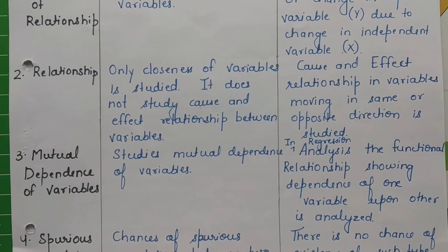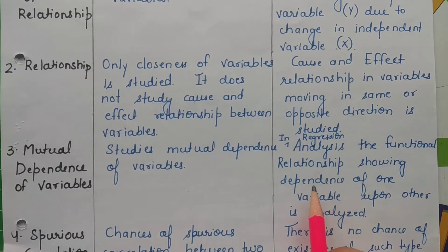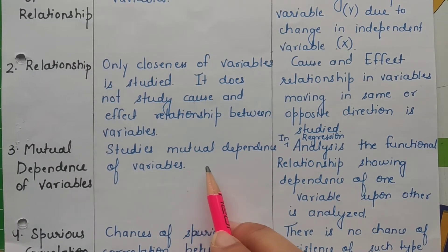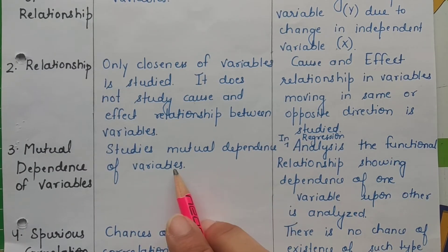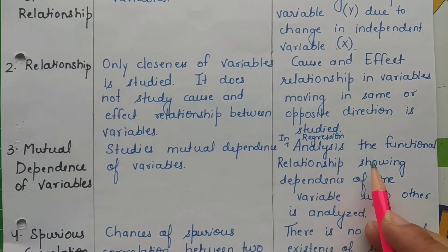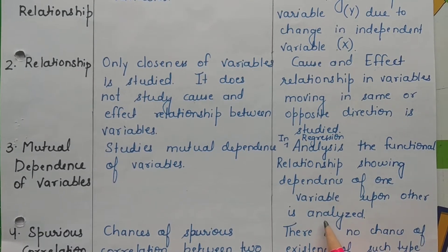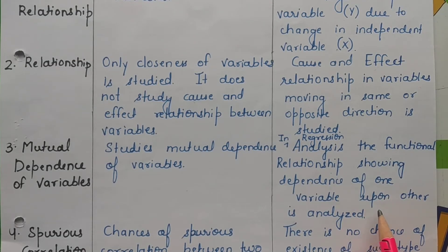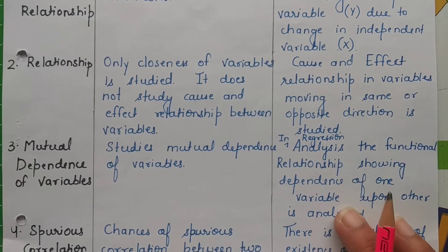Regarding mutual dependence of variables: both correlation and regression check mutual dependence. But correlation purely studies mutual dependence, whereas in regression, along with mutual dependence, the functional relationship between the variables is further analyzed — showing the dependence of one variable upon another, and analyzing the extent and degree of effect. So here, a functional relationship is also established.